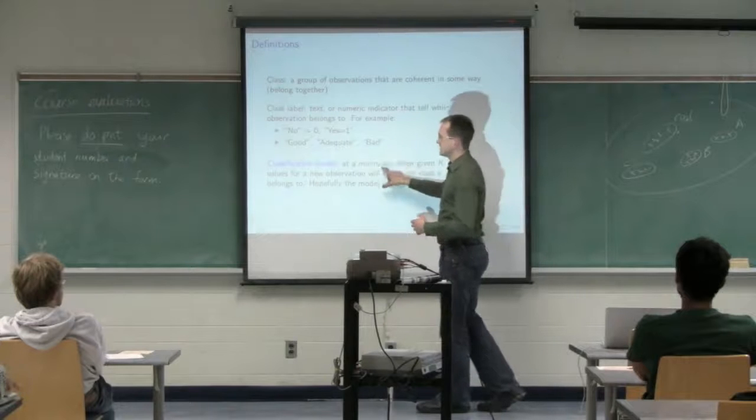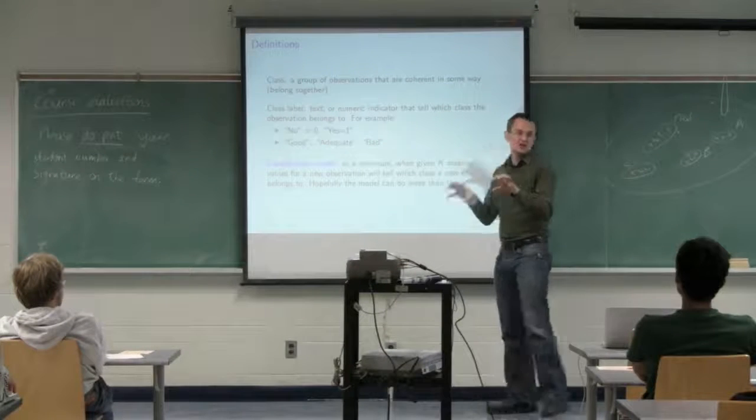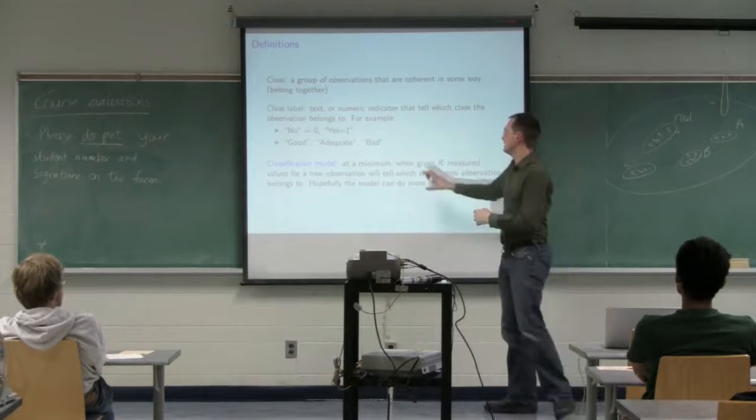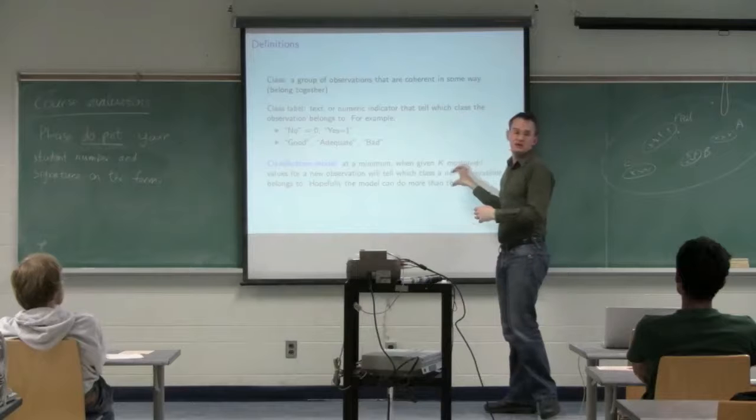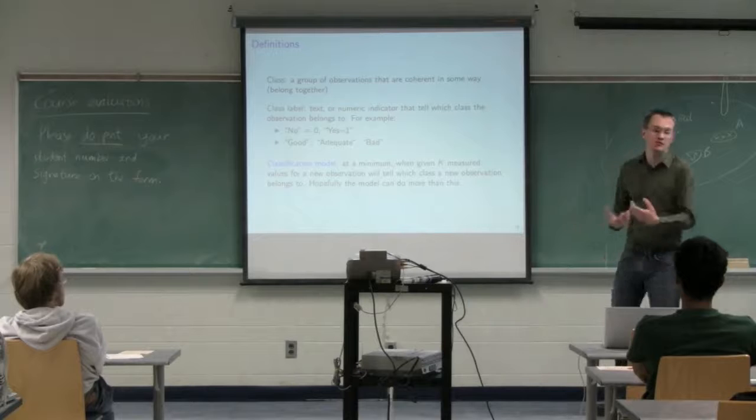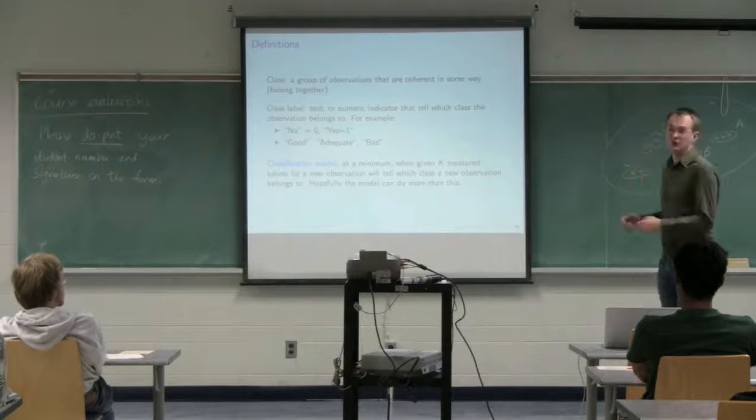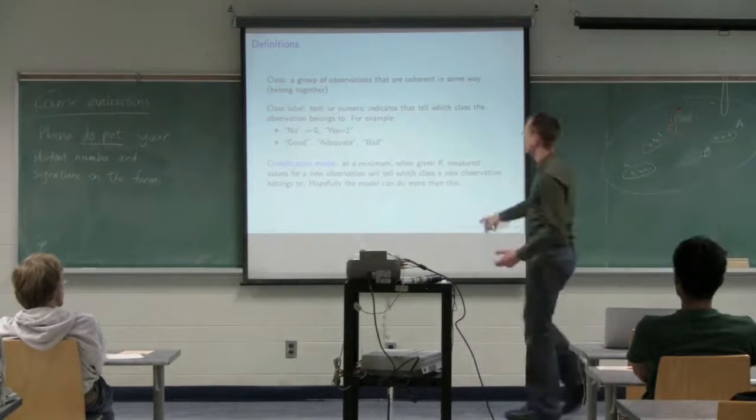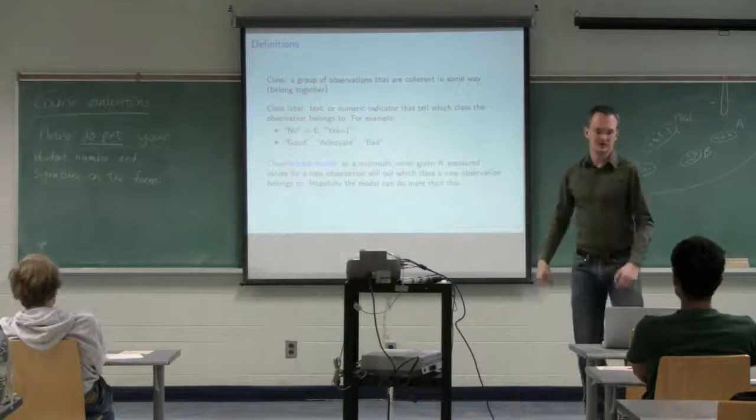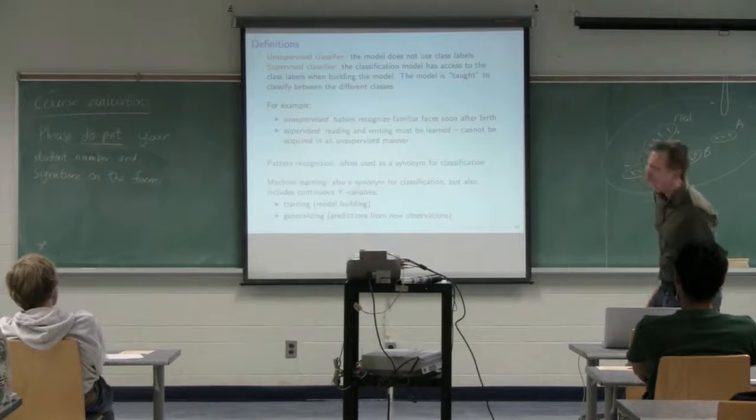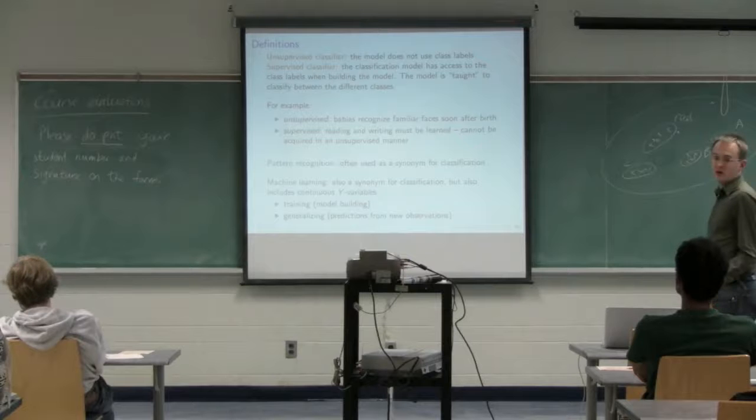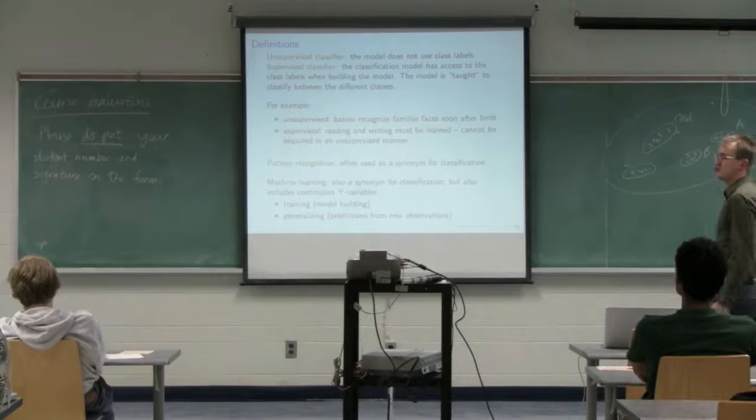It's a black box that takes K inputs and spits out at the end a class label for you. How it does that is what we're going to focus on in today's class. At the very basic, it's just a single latent variable model, but it might be two latent variable models used in series, one followed by another. Or a latent variable model followed by a neural network, or a least squares model first followed by an SVM. We'll look at our classifiers in two different ways: unsupervised or supervised.